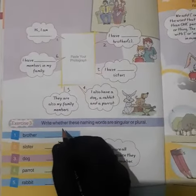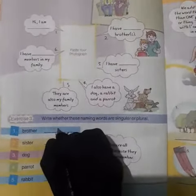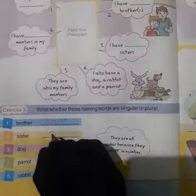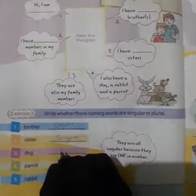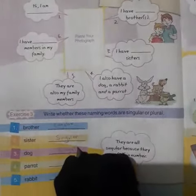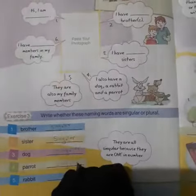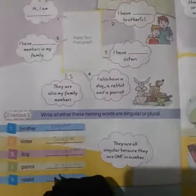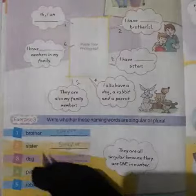Write whether these naming words are singular or plural. Brother — brother is singular. Sister — sister is singular. Dog — dog is singular. Parrot — parrot is singular. Rabbit — rabbit is singular. They are all singular because they are one in number.